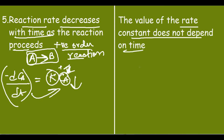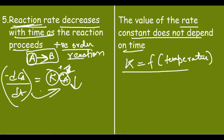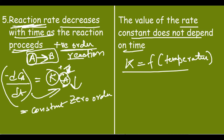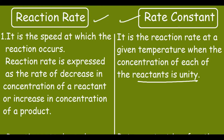The rate constant k does not depend on time — it only changes if the temperature changes. For a positive order reaction, the reaction rate decreases with time. For a zero order reaction, the rate is constant and does not depend on time. For a negative order reaction, the behavior is the reverse of the positive order case.